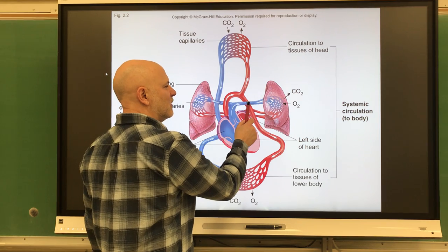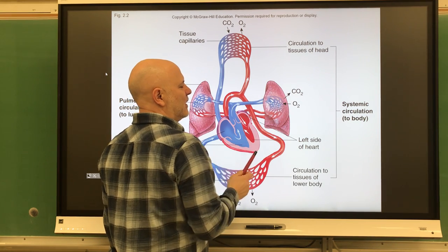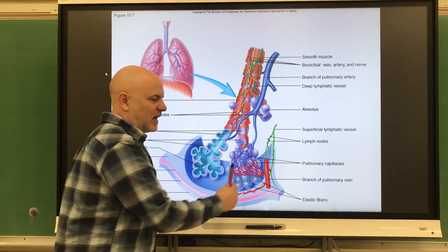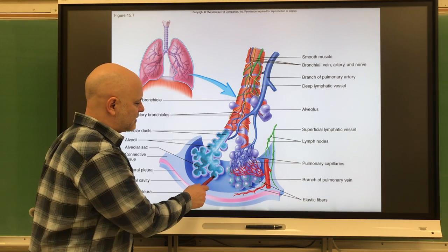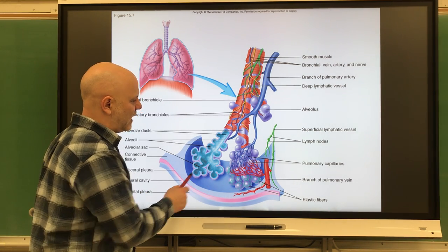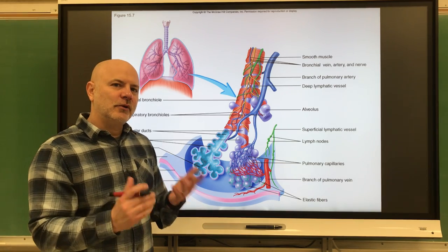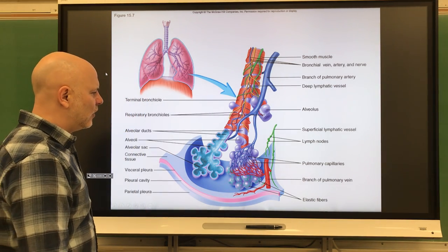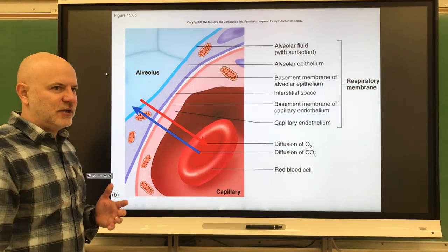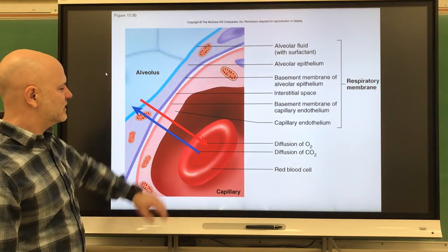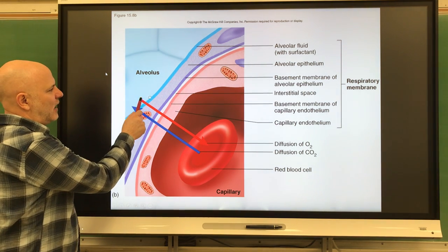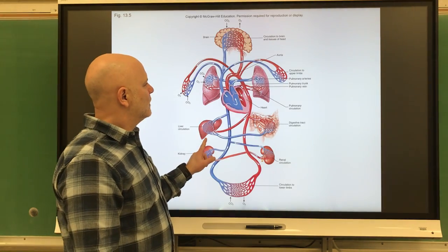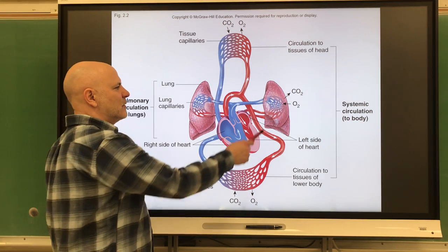Once the right ventricle fills with blood, it contracts and pushes blood through the pulmonary semilunar valve into the pulmonary trunk, and from there blood goes to the lungs — moving from the pulmonary trunk to the pulmonary arteries to the capillaries in the lungs. These capillaries surround small air sacs called alveoli. Our lungs aren't two large sacs; they're made up of many, many small sacs, and the capillaries cover over those alveoli — this is where gas exchange occurs.